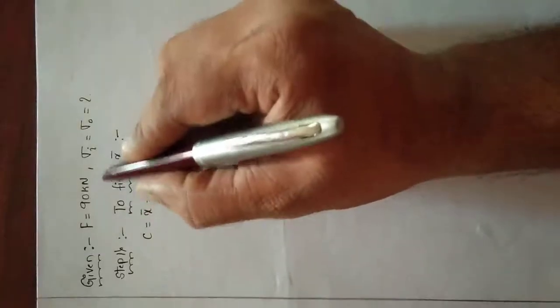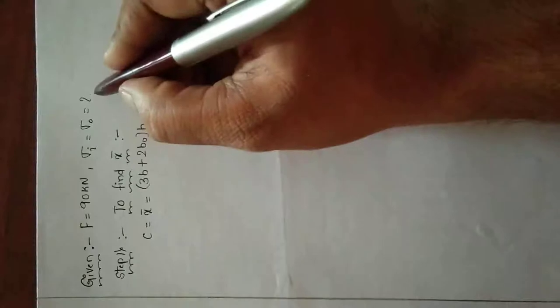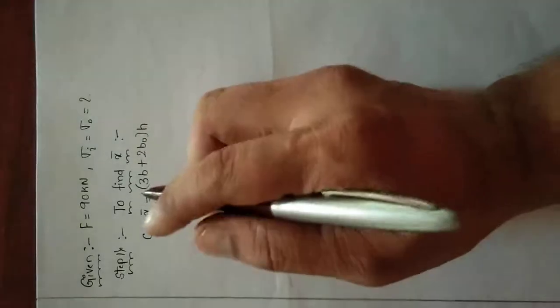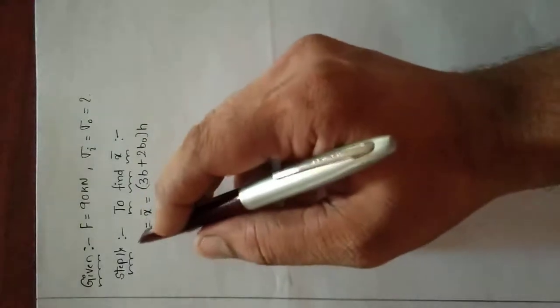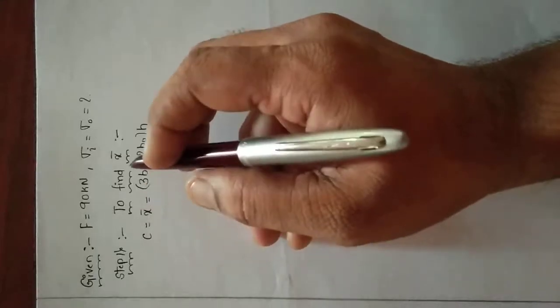What is given here: F is equal to 10, load is 90 kilonewton, sigma i and sigma naught we need to find. So here, first we need to find step one — what to find — x-dash.